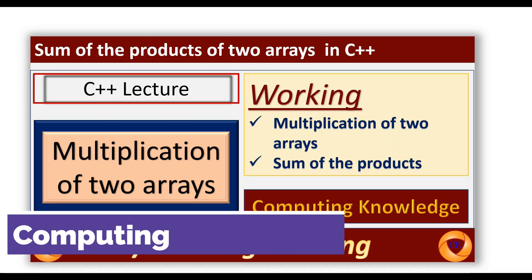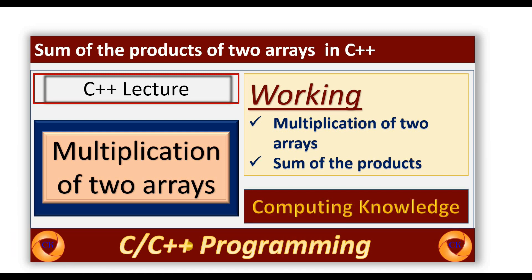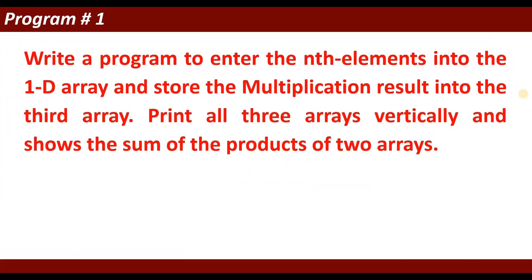In this video session I will show you how to multiply the elements of two arrays, store the result into a third array, and then calculate the sum of the products of that third array. The task is: write a program to enter N elements into a 1D array, store the multiplication result into a third array, print all three arrays vertically, and show the sum of the products of two arrays.